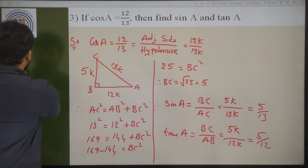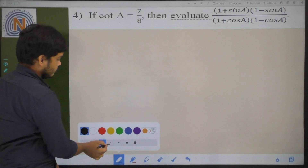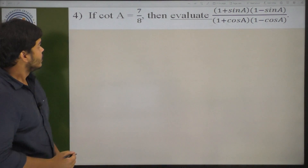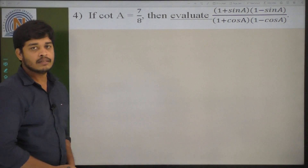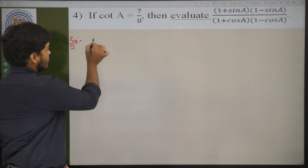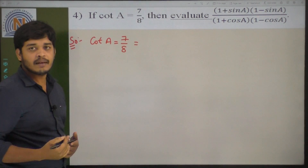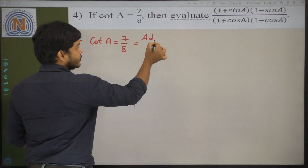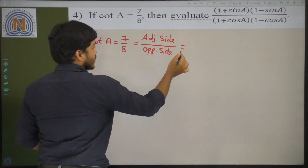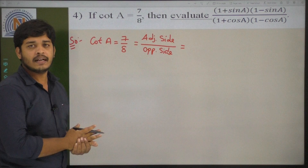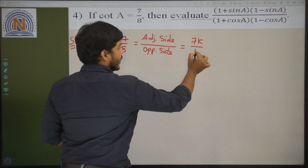Now coming to the next problem. See children, if cot A is equal to 7 by 8, then evaluate 1 plus sin A into 1 minus sin A, divided by 1 plus cos A into 1 minus cos A. He is given cot A only. Cot A is adjacent side by opposite side.